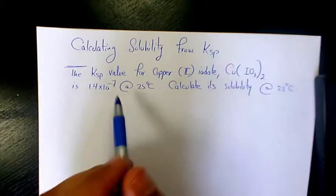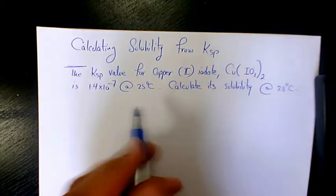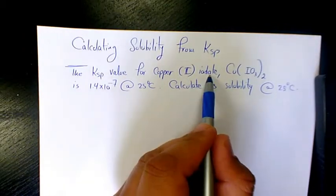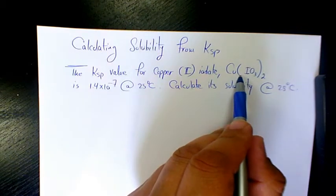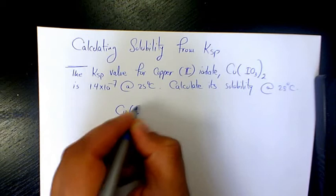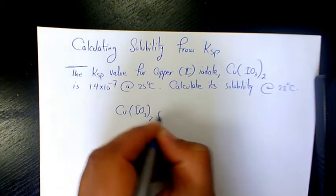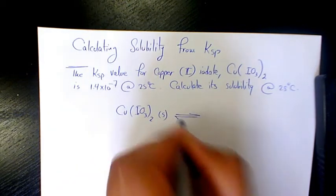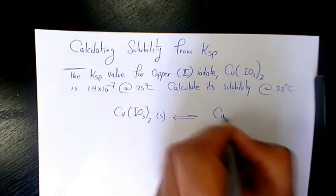So we can say the system initially has copper(II) iodate plus water. Then it's going to dissolve. So we have Cu(IO3)2 in solid phase. When it dissolves it's going to produce ions.